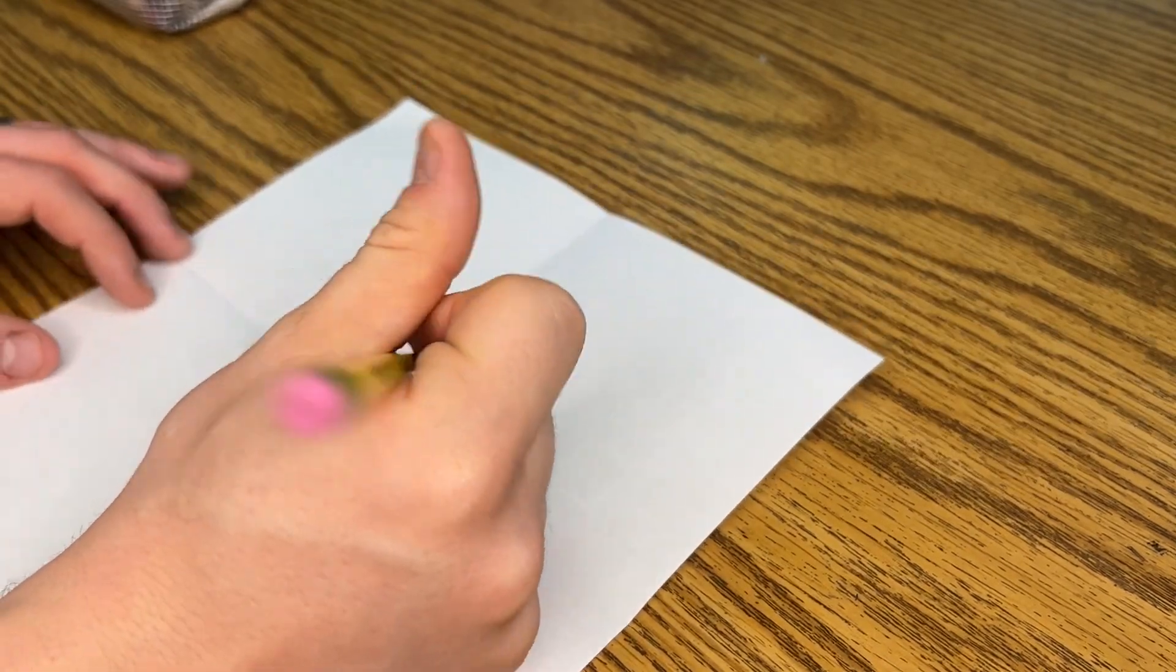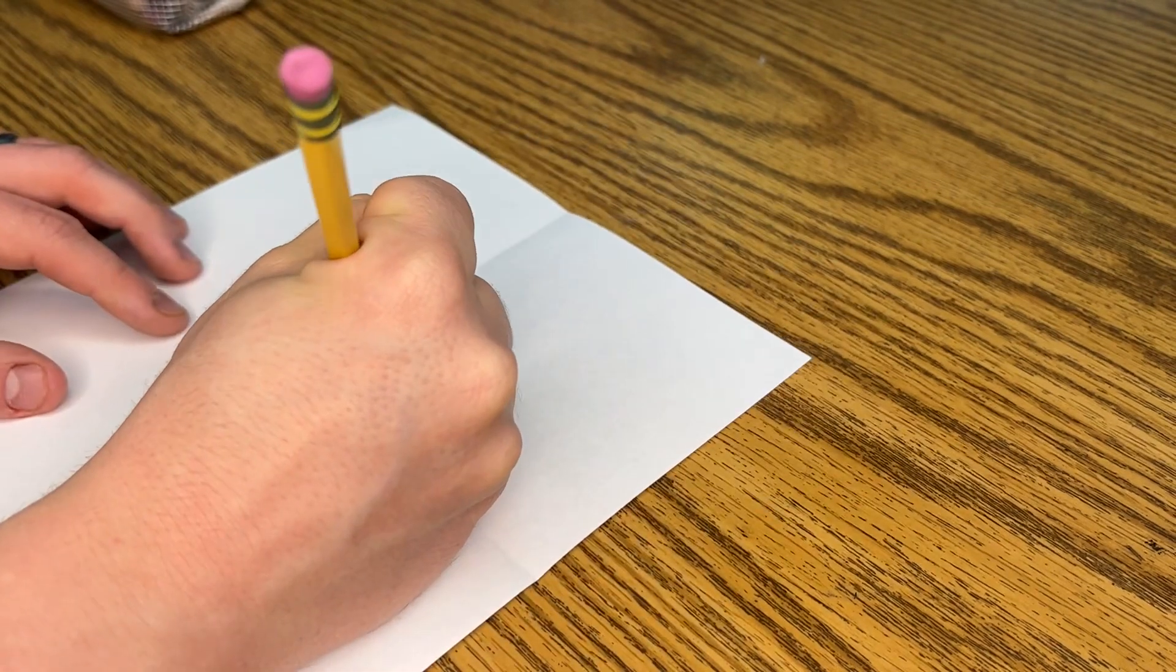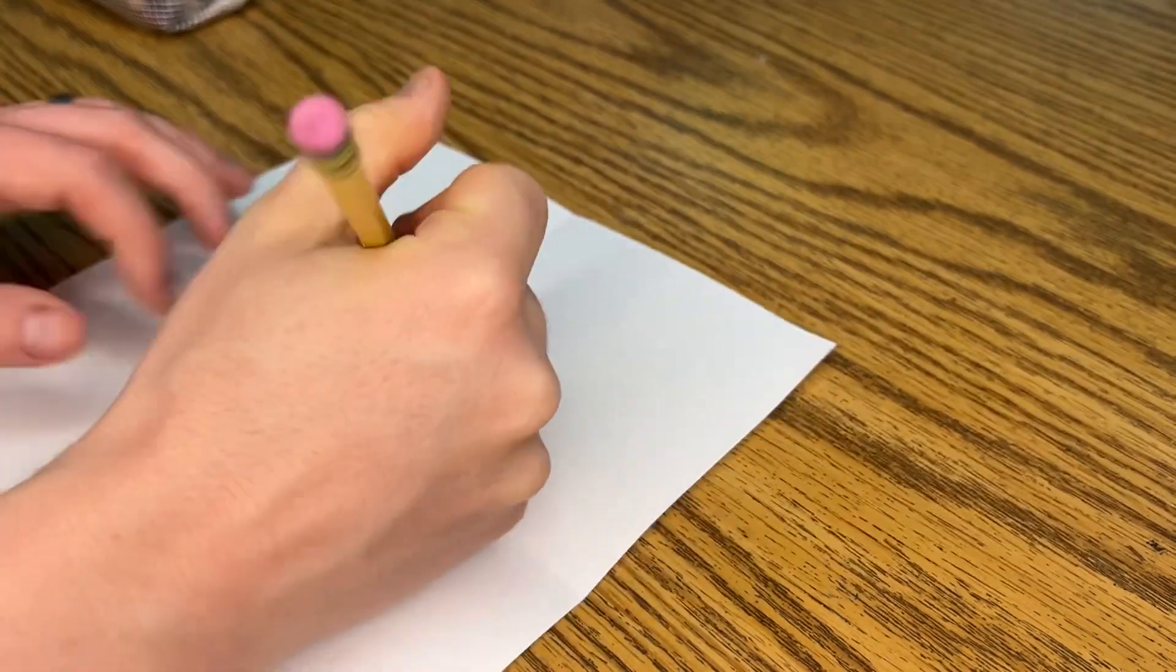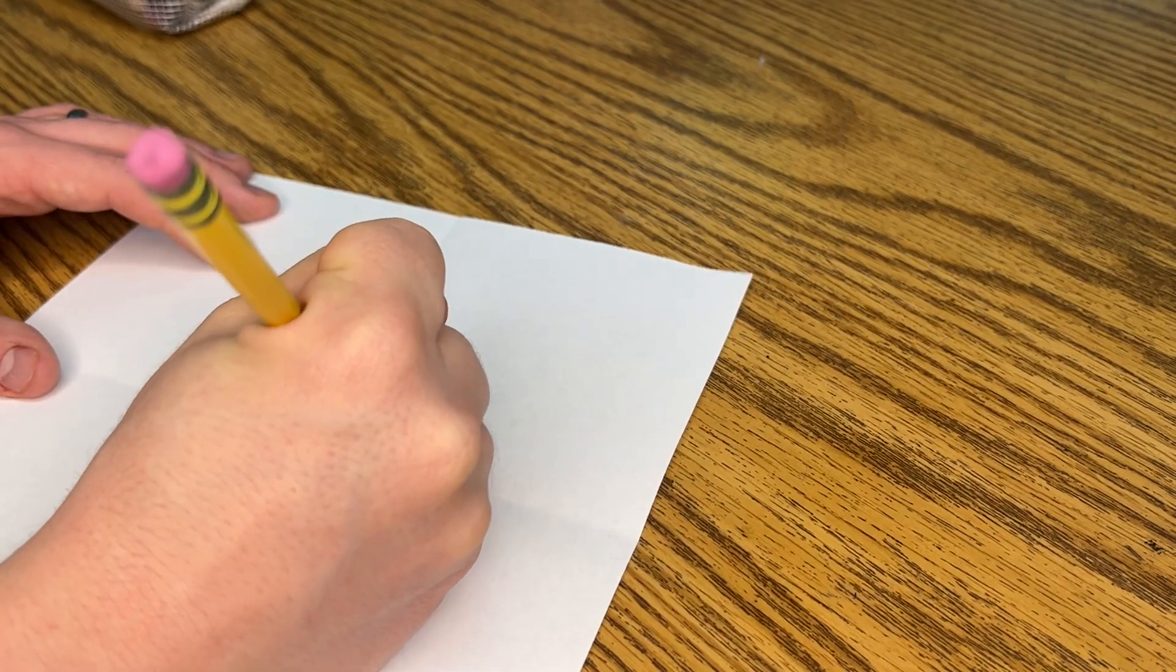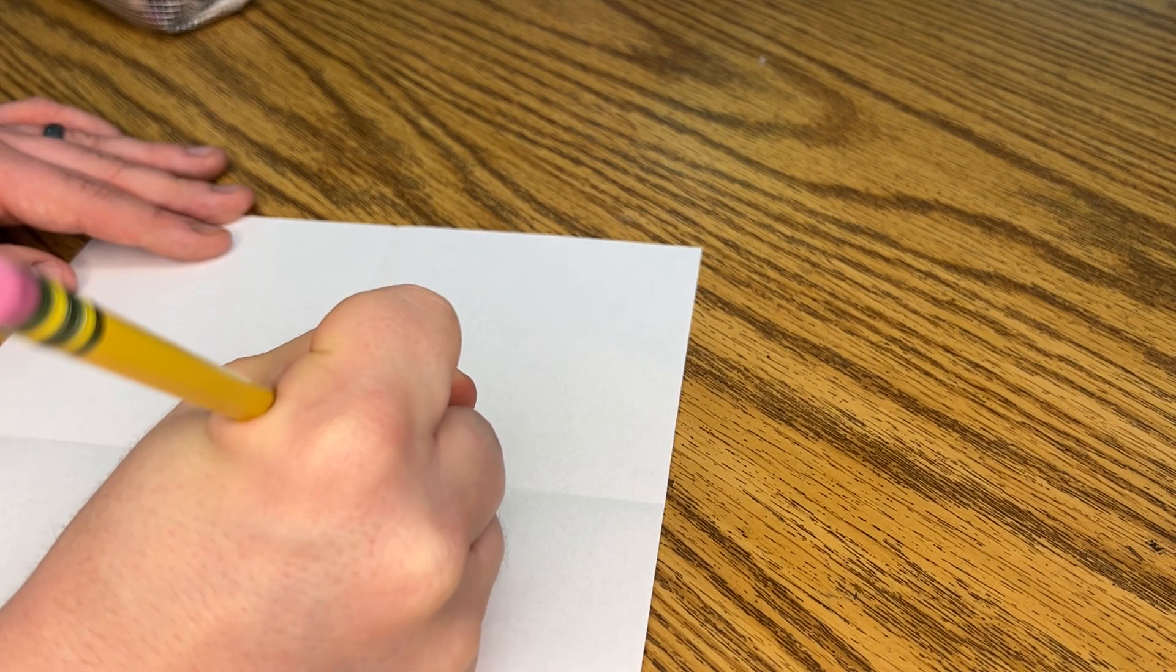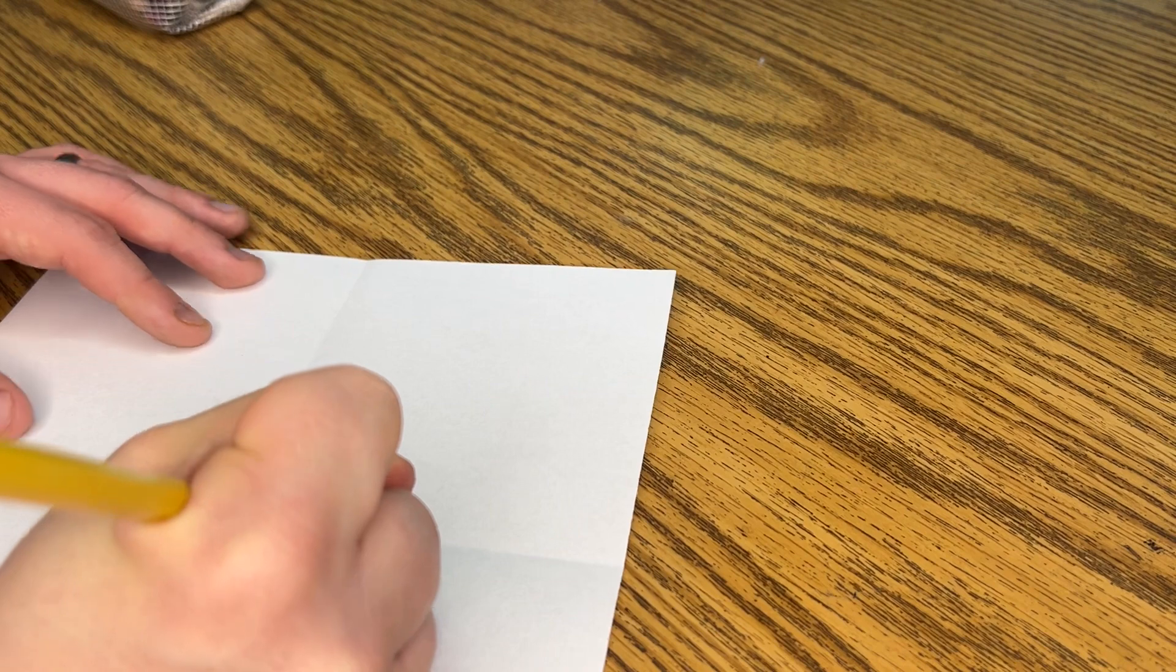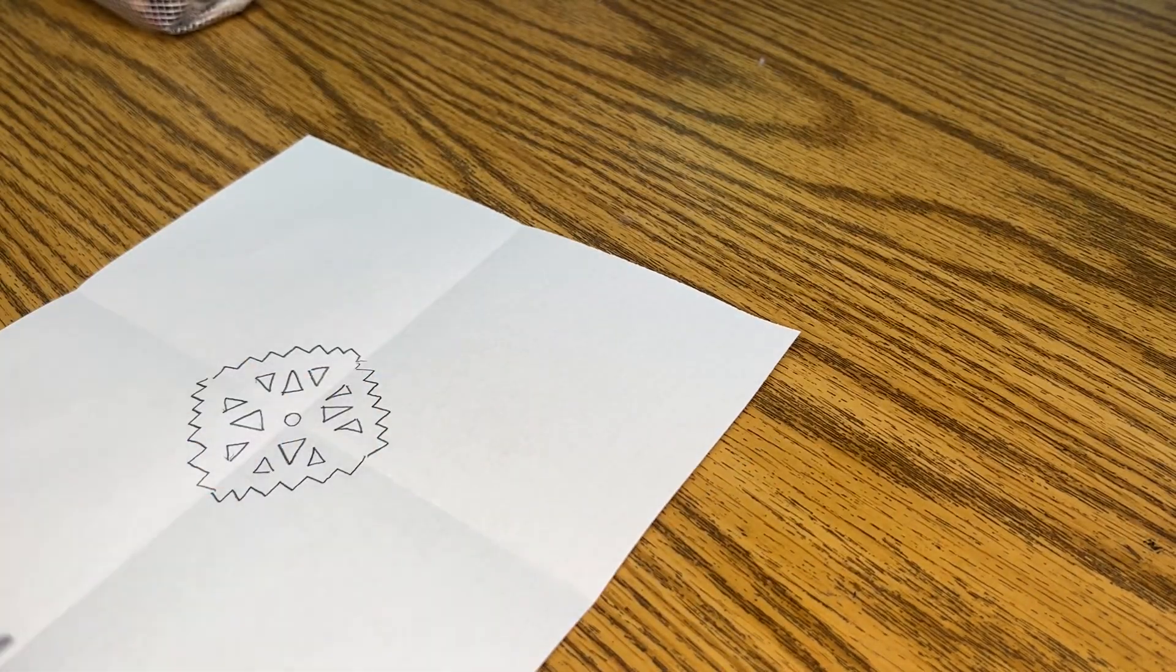You may decide that you don't want to do more shapes for your next pattern. You totally could. But think in your head, what is another way, instead of shapes, that we could create a pattern? If you thought a line, then you are correct. You could do a pattern of line. So I'm going through each one, and I'm adding a zigzag line. But of course, you can pick a different line. You could do a castle line. You could do a squiggly line. You could even do a scribble line, as long as it's the same scribble line in every section.